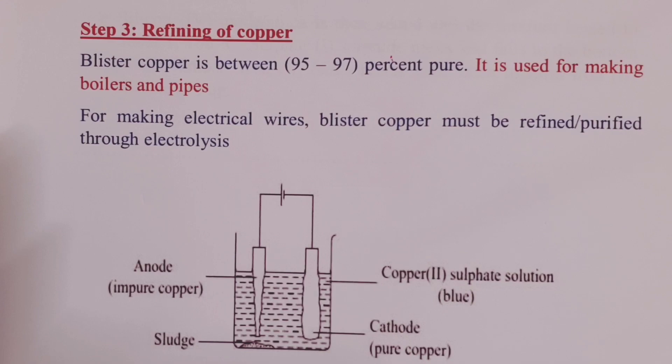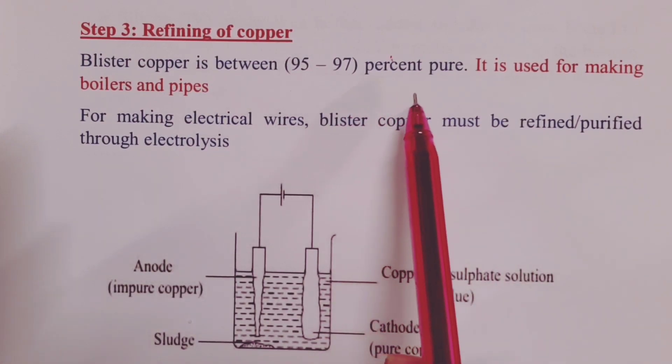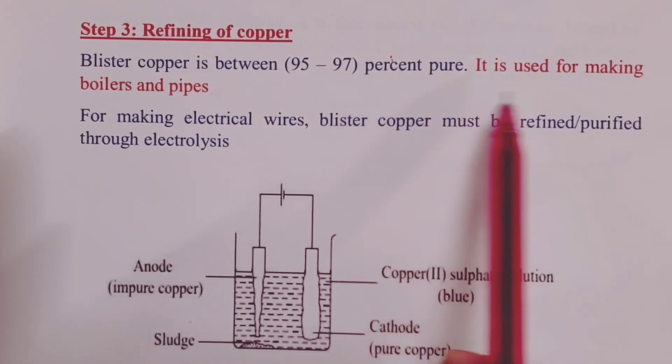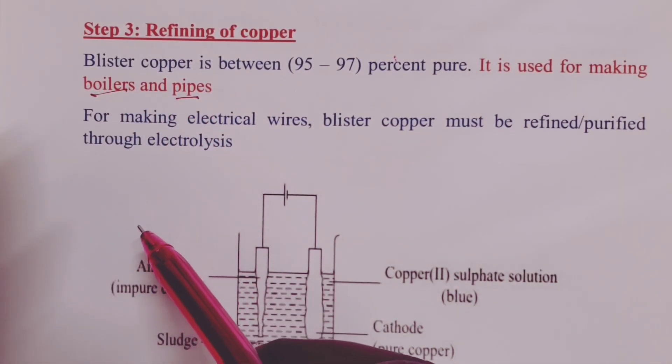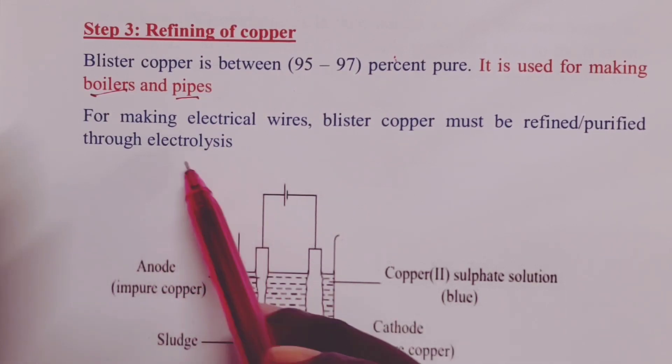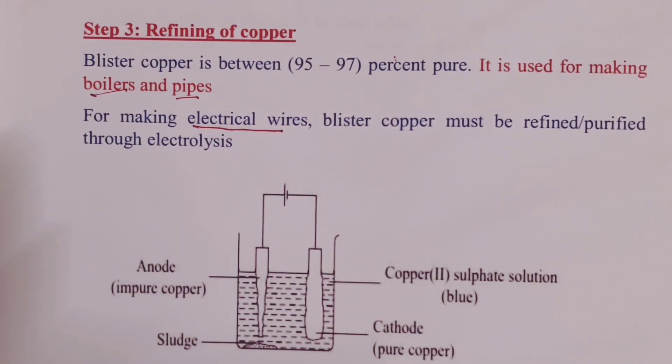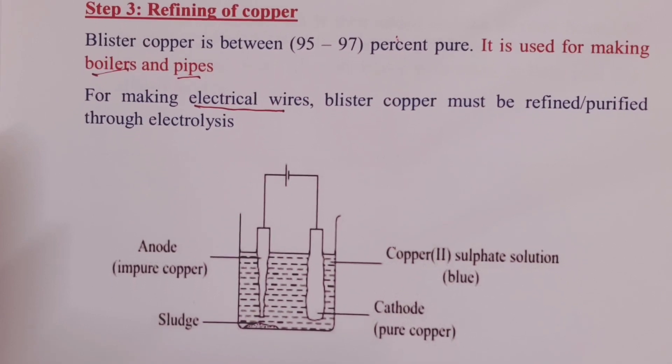Now to the last step, and that is refining or purification of copper. The blister copper obtained from reduction of copper-1-oxide is only just about 95 to 97 percent pure. This copper can only be used in making boilers or pipes. If we need copper to be used for making electrical wires, then we have to refine or purify the blister copper. This is done through electrolysis.